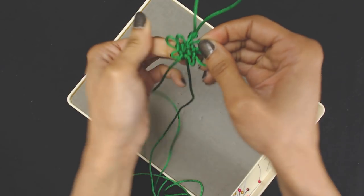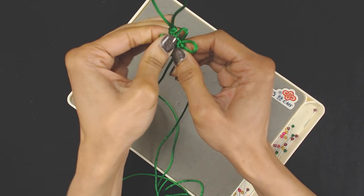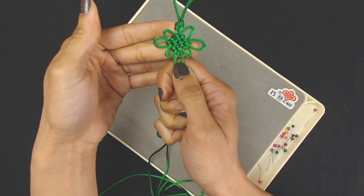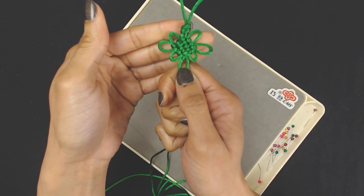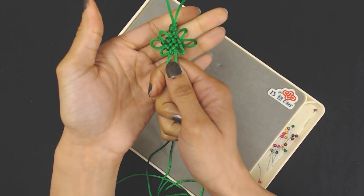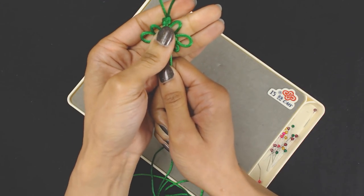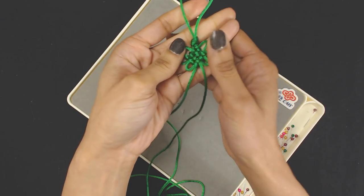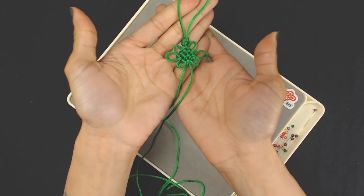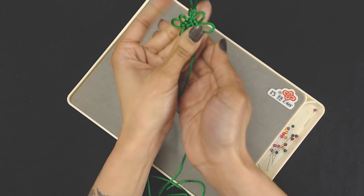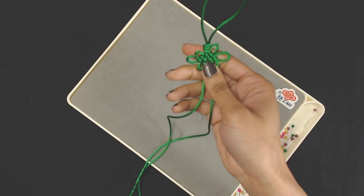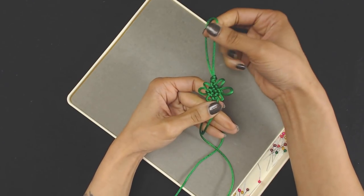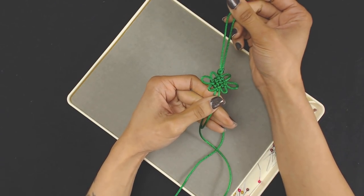When you're doing it for the first time, it looks ridiculously difficult, but after you've made one, you're like oh yeah, not too bad. The more you make, the easier it gets, of course. You can then add this to just about anything. I left a nice little loop here so I can attach it as a keychain.